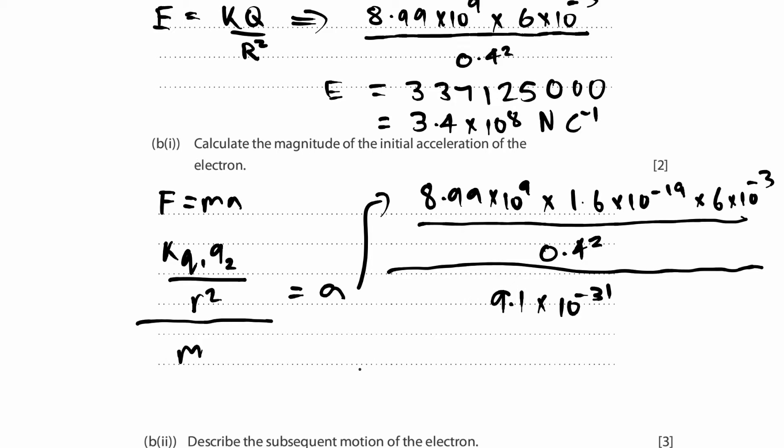So if we put this on our calculators, we get the acceleration of the electron to be, let's put this on our calculators. I've actually already calculated beforehand. The answer is 5.9 × 10^19 meters per second squared. It's actually really fast. Okay. But that's your answer. 5.9 × 10^19 meters per second squared. Okay. So let's go to the next question.